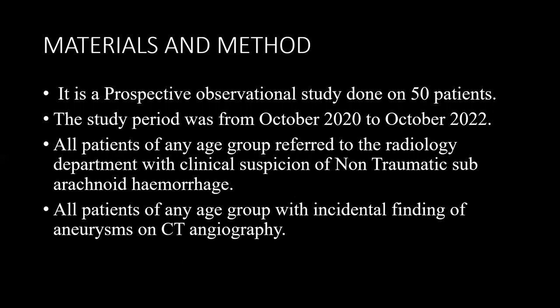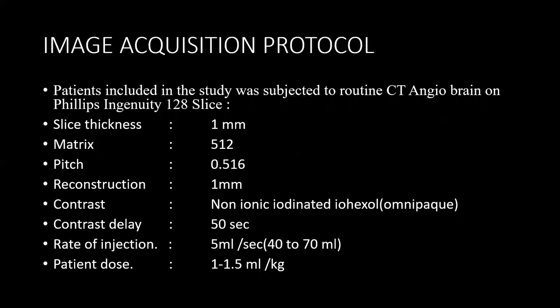Materials and methods: This is a prospective observational study done on 50 patients. The study period was from October 2021 to October 2022. All patients of any age group referred to the radiology department with clinical suspicion of non-traumatic subarachnoid hemorrhage, or with incidental finding of aneurysms on CT angiography, were included. All imaging was performed on a Philips 128-slice scanner.